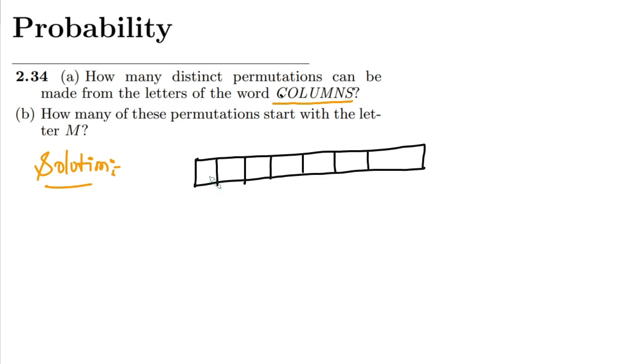These are the seven slots. In the first slot, how many options would I have here? I will have, out of these seven, any letter here. So the number of possible ways here are seven.